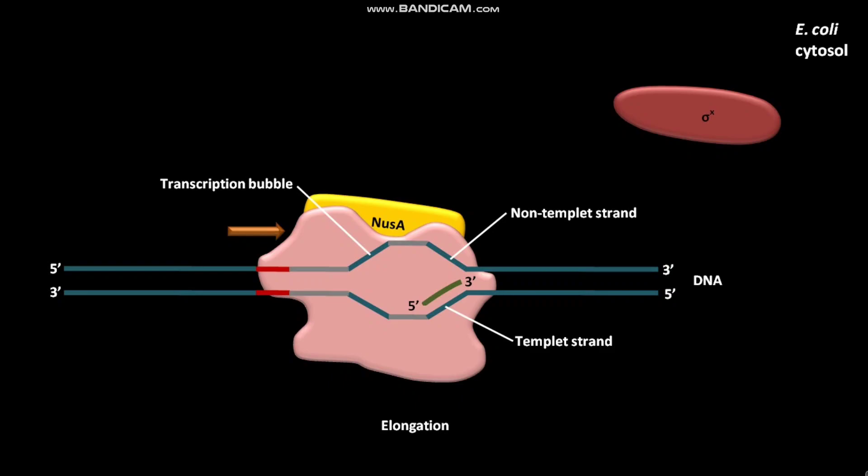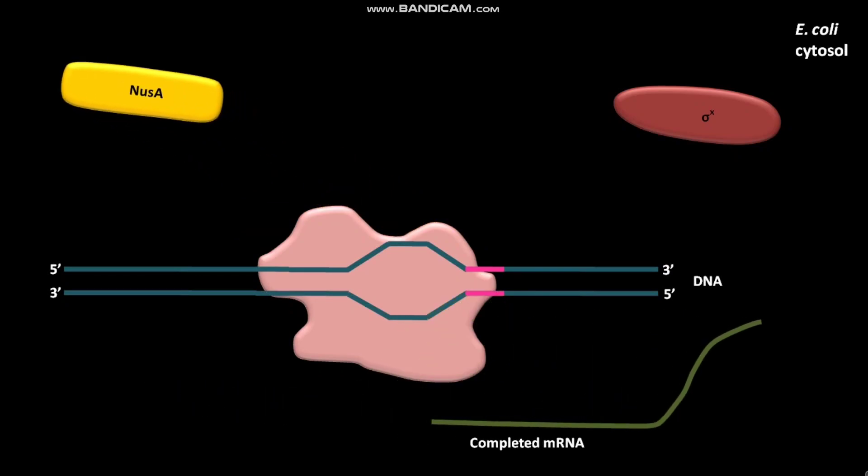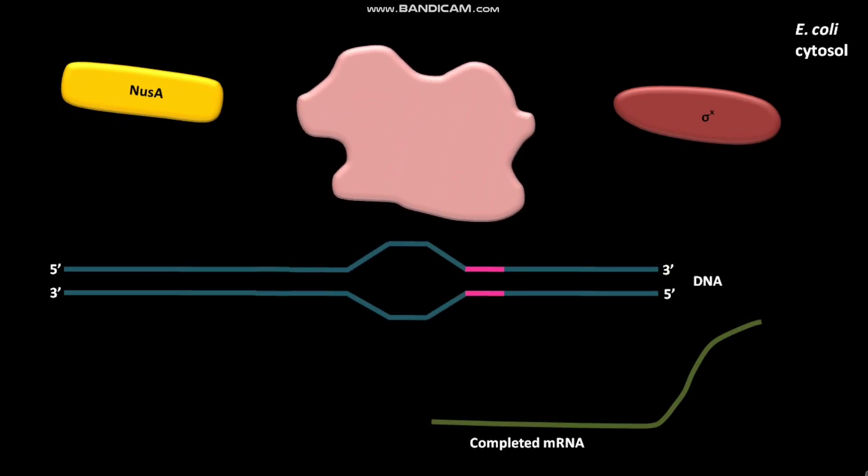When RNA polymerase reaches a terminator sequence, RNA synthesis halts. NusA and completed mRNA then dissociate from the RNA polymerase. The RNA polymerase then dissociates from the DNA.